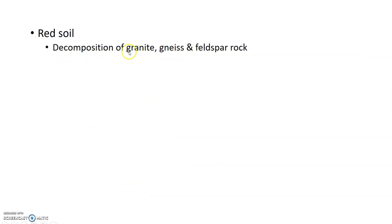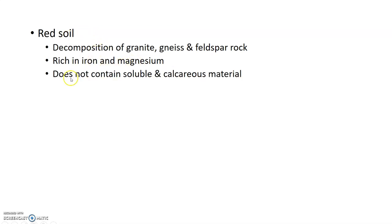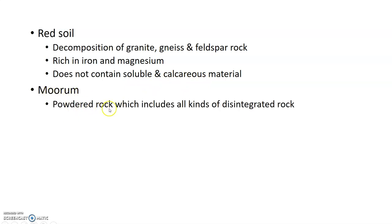Red soil is derived from granite, gneiss, and feldspar. It contains iron and magnesium, which give it its red color. Red soil does not contain soluble or calcareous material.